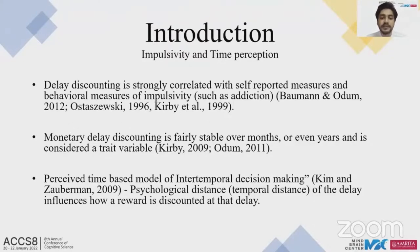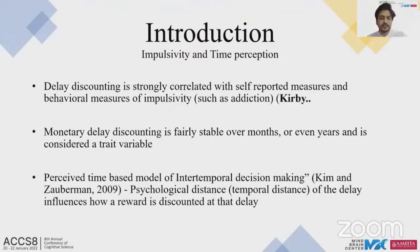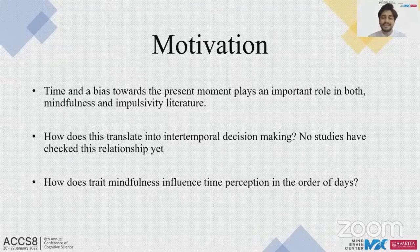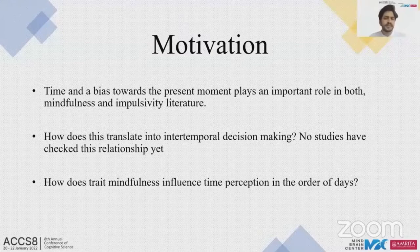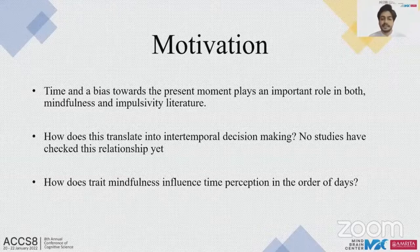As per the Perceived Time-Based Model of Intertemporal Choice proposed by Kim and Soberman in 2009, the psychological distance of a delay — the temporal distance — influences how a reward is discounted at that delay. Some studies have found direct influences of trait mindfulness and impulsivity on temporal discrimination, estimation, and reproduction tasks, but these measure time perception in the order of seconds. How such orientations influence time perception for longer delays had not been well studied, and this question was at the core of our study.